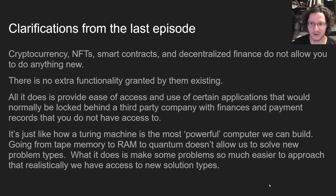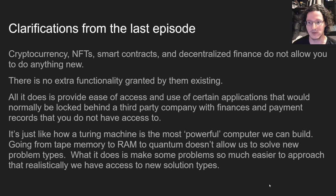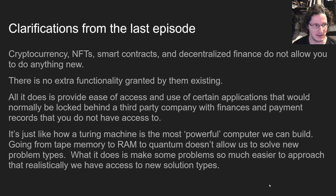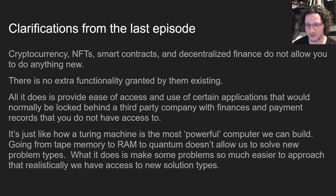Cryptocurrencies and blockchains don't really allow you to do anything new. There's no extra functionality from them existing, but they do provide ease of access for using certain applications that would normally be locked behind a third party — with finances and pay records you might not have access to. Similarly, if you have any idea of how computation works, a Turing machine is the most powerful machine we can really build, and even though we've made significant advances in how we construct computing machinery, we aren't able to solve any new classes of problems. So cryptocurrency doesn't allow you to do anything that normal private industries already give you access to.